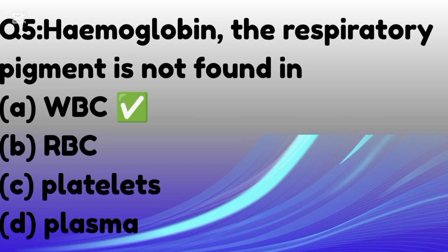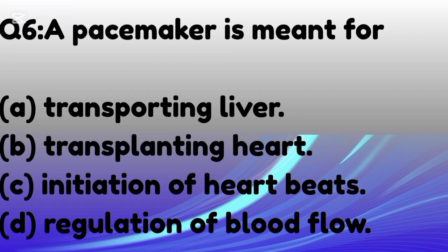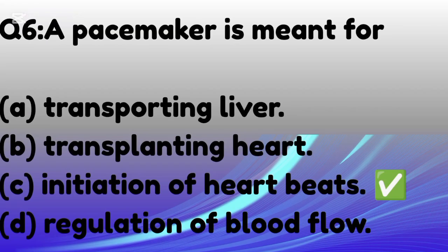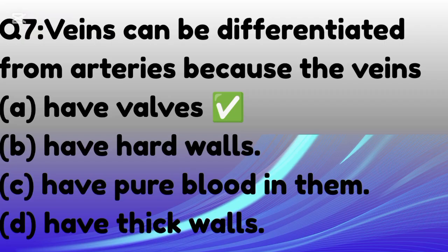Hemoglobin, the respiratory pigment, is not found in — the correct option is A: WBC (white blood cells). Our pacemaker is meant for — the correct option is C: initiation of heartbeats. Veins can be differentiated from arteries because veins have — the correct option is A: valves.